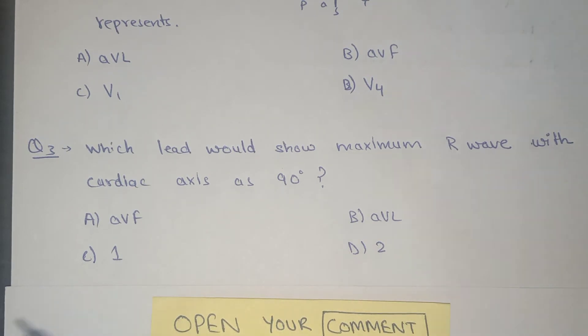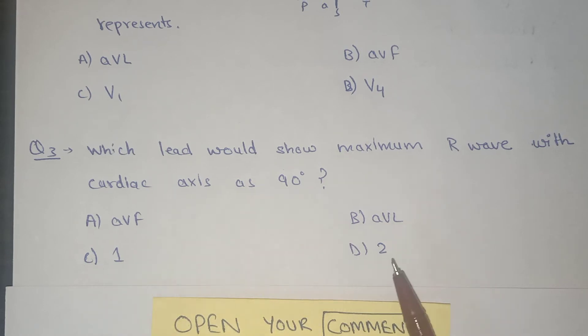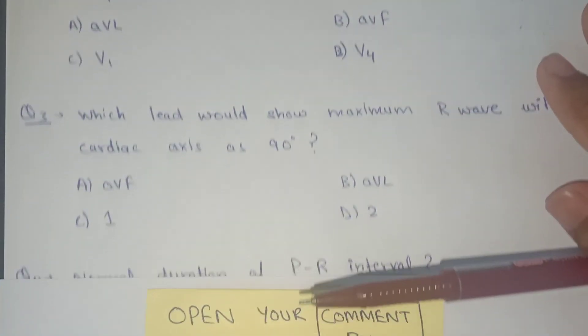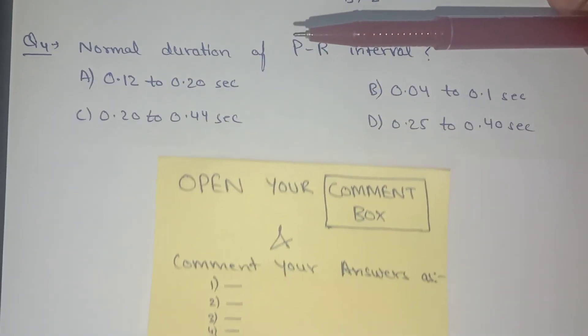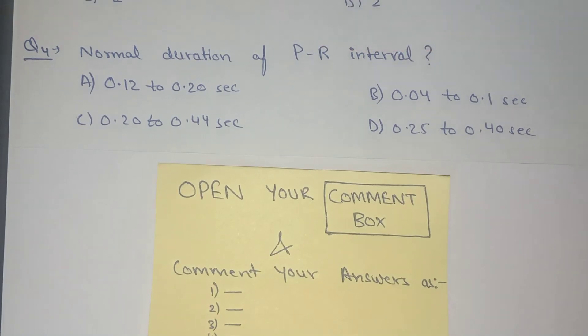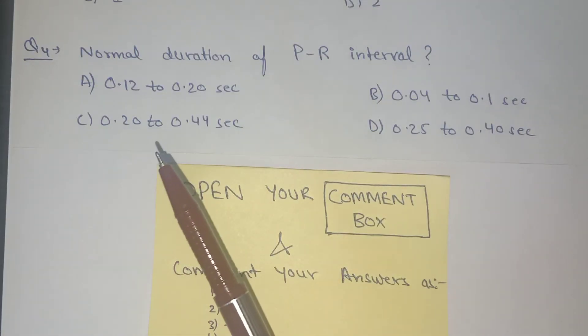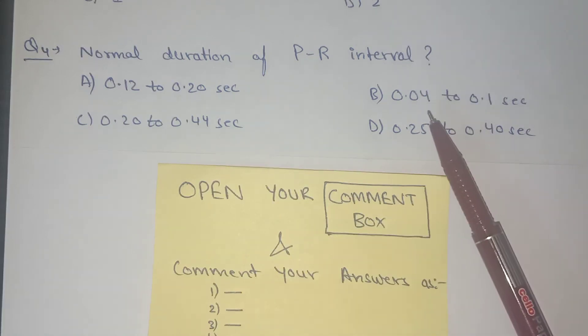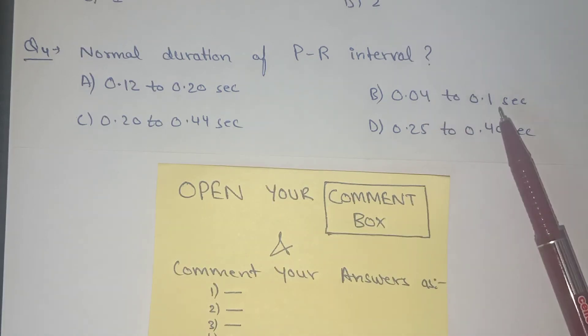maximum R wave with cardiac axis 90 degrees? Options are: A) AVF, B) AVL, C) Lead 1, or D) Lead 2. The fourth question: Normal duration of PR interval is? Options are: A) 0.12 to 0.20 seconds, B) 0.04 to 0.1 second,